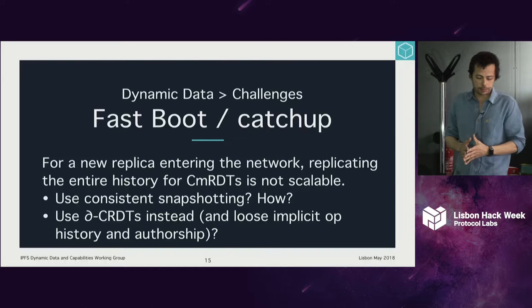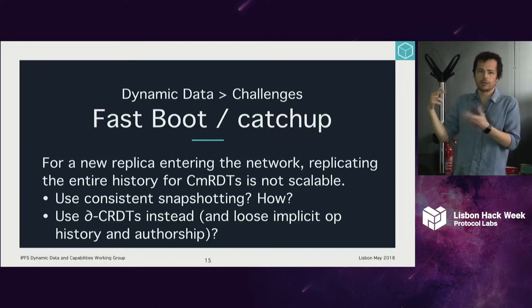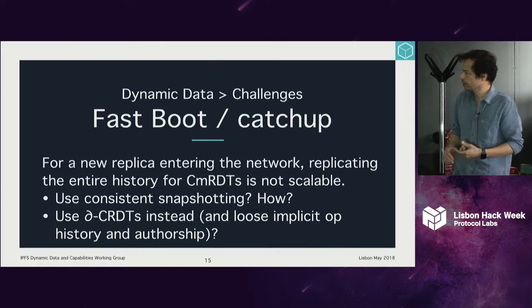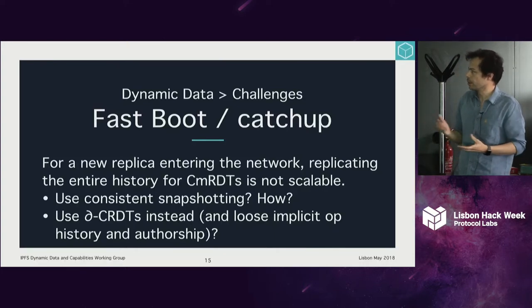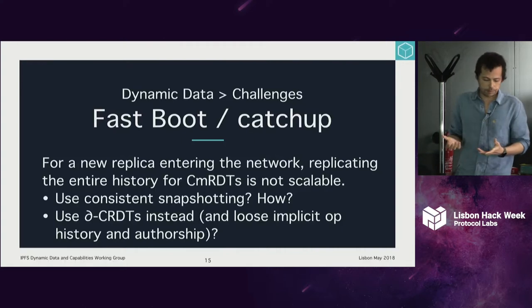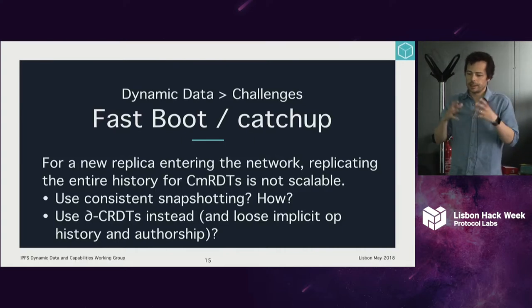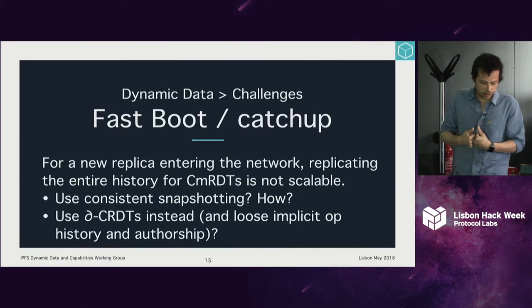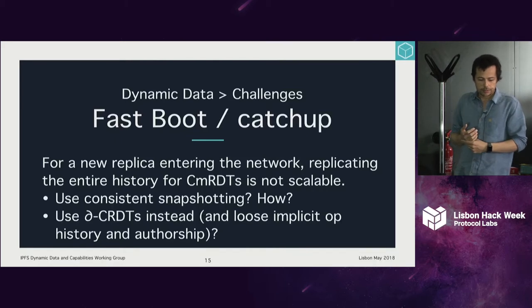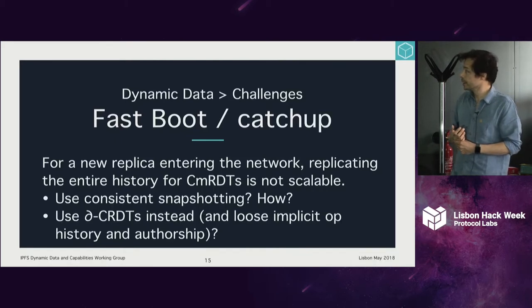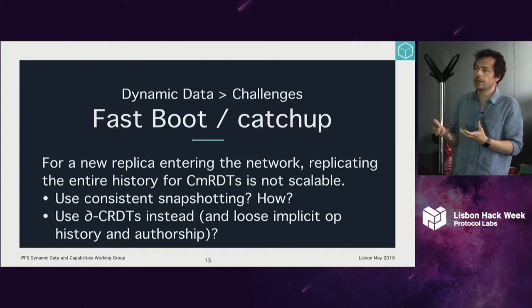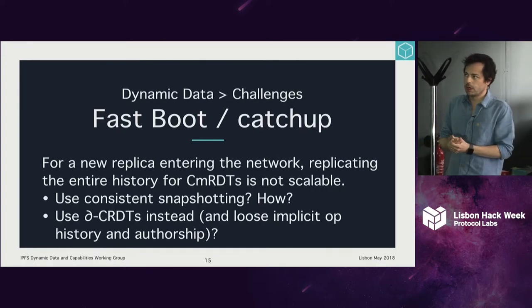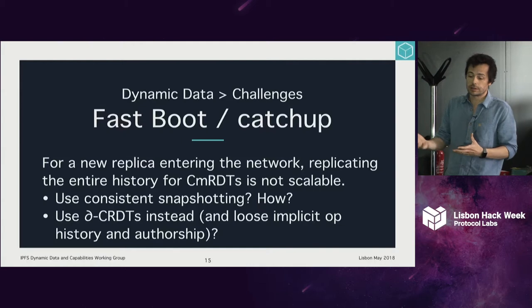I'm going to describe the two RFPs — the problems behind the two RFPs that we have published. This is the fastboot or catch-up problem. Operation-based CRDTs work by creating an operation log that will be replicated. CMRDTs — commutative replicated data types — use this. This poses a problem for how does a new fresh node be able to join the group in a way that does not require synchronizing the whole operation log.